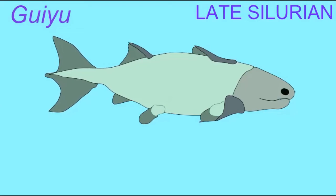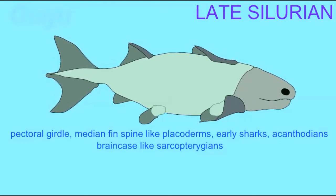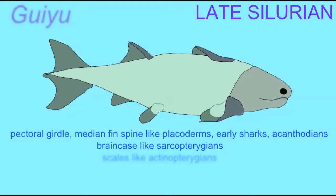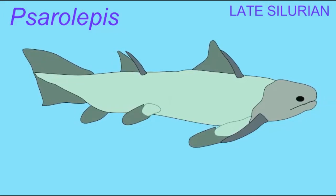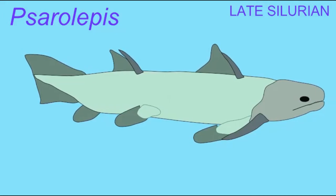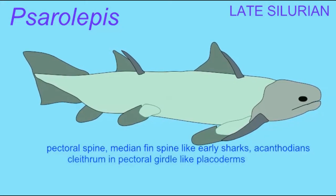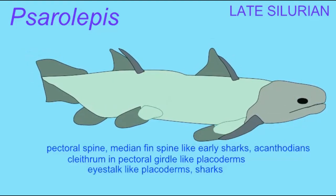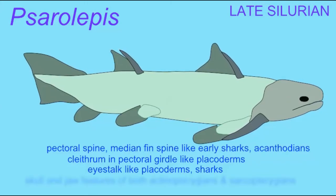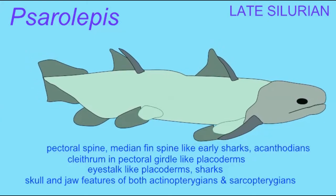The first bony fish to appear in the fossil record are not the teleosts, which represent almost all bony fish alive today. Teleosts would not appear until the age of dinosaurs in the Triassic period. The earliest bony fish were all transitional forms, having some but not all of the features of the later teleost fish, and still retaining features associated with cartilaginous fish, or with acanthodians, or with placoderms.